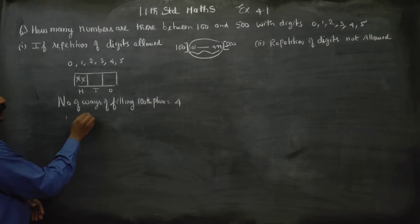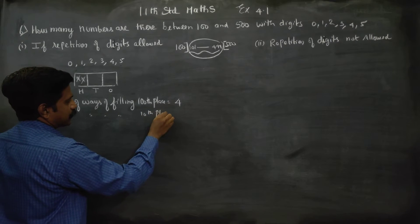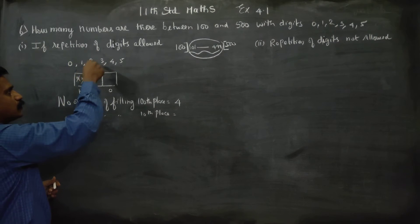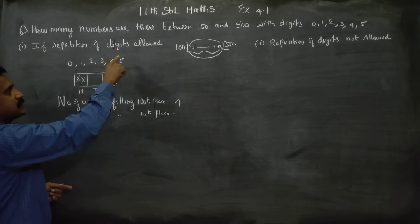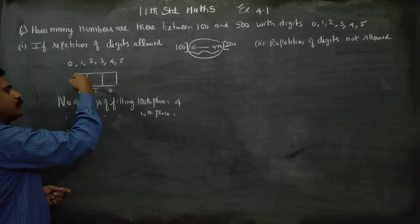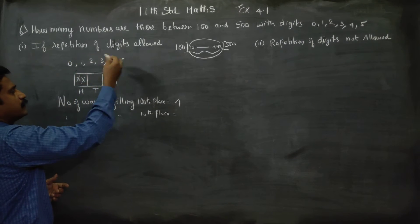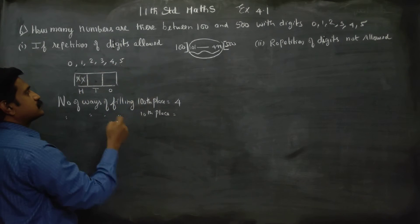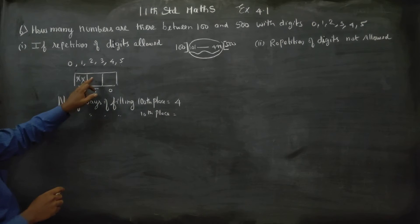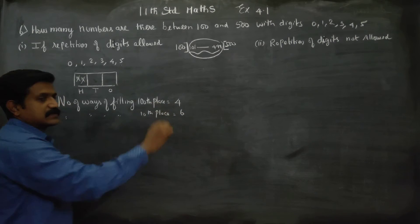The 10th place — the number of ways of filling the 10th place. Since repetition is allowed, all numbers 0, 1, 2, 3, 4, 5 are available. For example, if 0 and 5 are free, then numbers like 455 and 405 are possible. The number of ways of filling the 10th place is 6 ways.